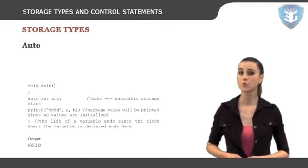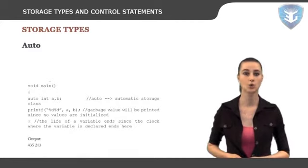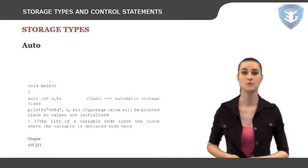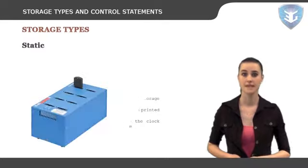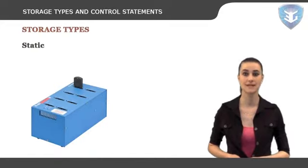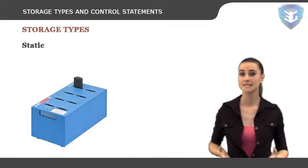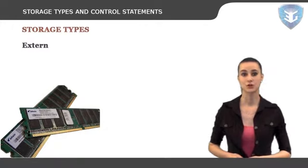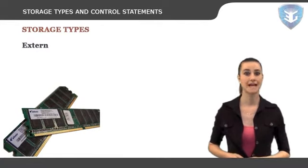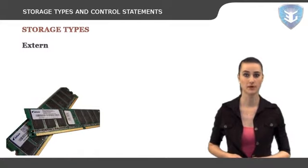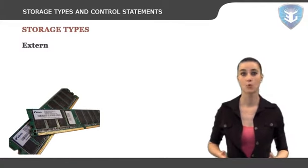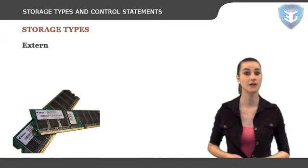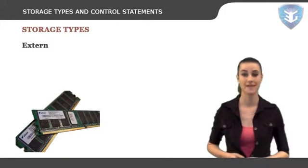The auto storage class is the default storage class for all local variables. Auto can only be used within functions, that is, local variables. The static storage class instructs the compiler to keep a local variable in existence during the lifetime of the program, instead of creating and destroying it each time it comes into and goes out of scope. The extern storage class is used to give a reference of a global variable that is visible to all the program files. When one uses extern, the variable cannot be initialized as all it does is point the variable name at a storage location that has been defined.